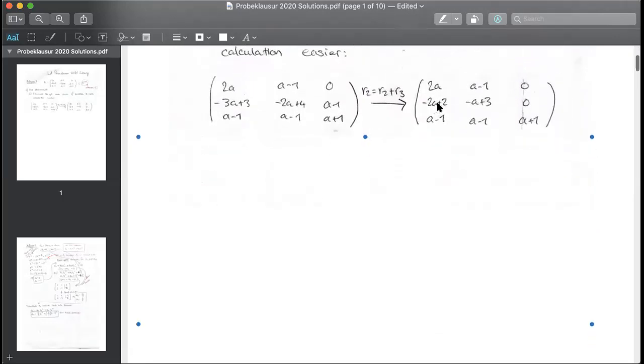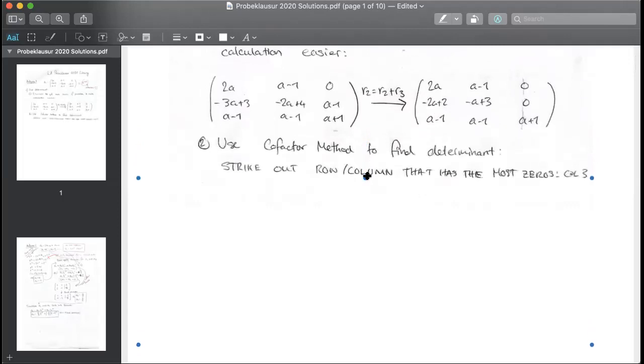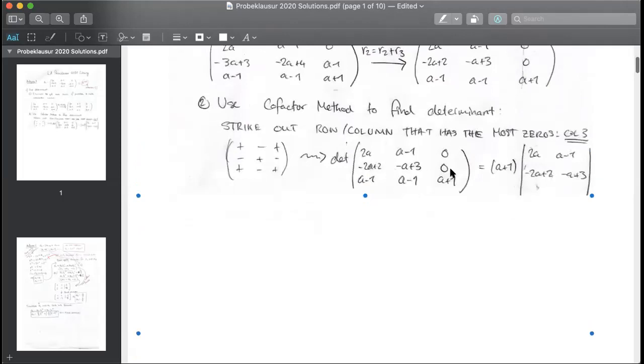So now finding the determinant, as we said, we're going to use the cofactor method. And the cofactor method is when you strike out the row or column. In this case, it's the third column because it has the most number of zeros in there. And ignore that for now. So when you strike that out, my bad, not ignore that. Pay attention to that. Do not forget your signs, guys.